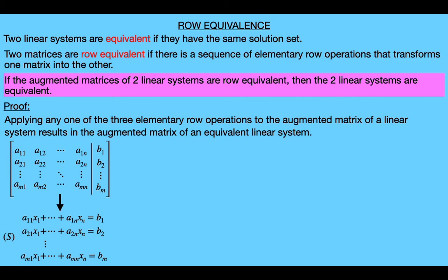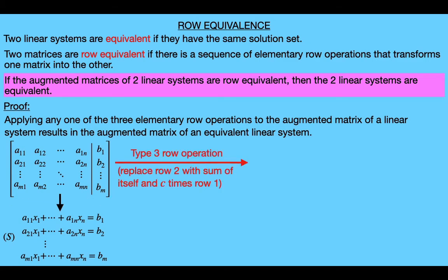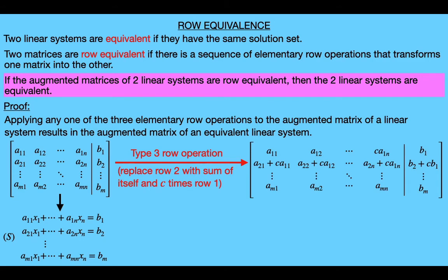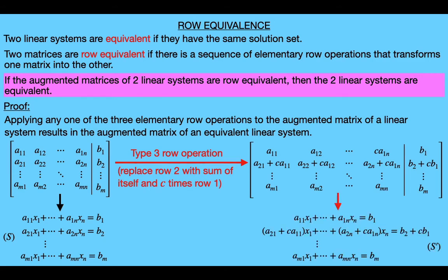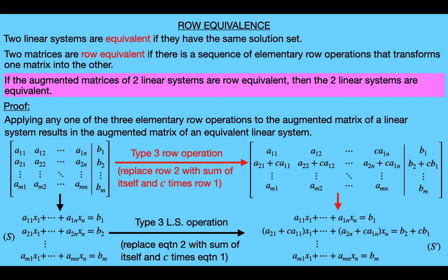Lastly, for the third elementary row operation, we apply the row operation to the augmented matrix by replacing the second row with the sum of itself and C times the first row for some constant C. We end up with a new matrix representing a new linear system. We can obtain S prime by using the third type of operation for linear systems — replacing the second equation with the sum of itself and C times the first equation — which doesn't change the solution set. So we've proved this statement for each of the three elementary row operations.